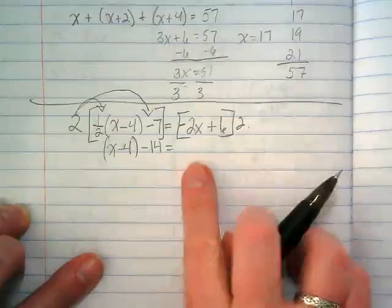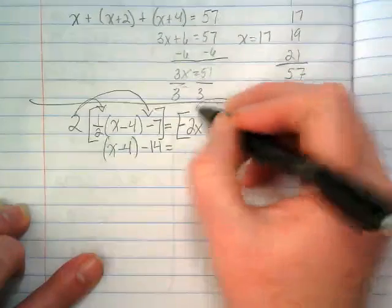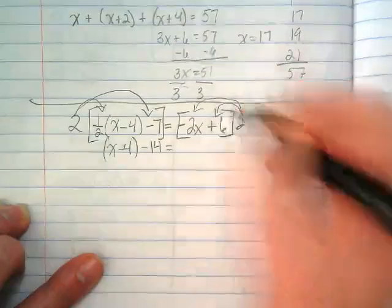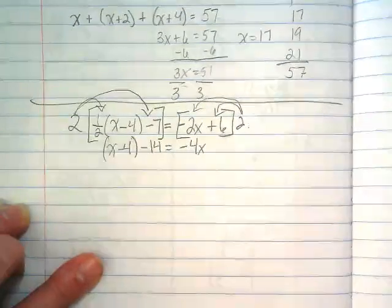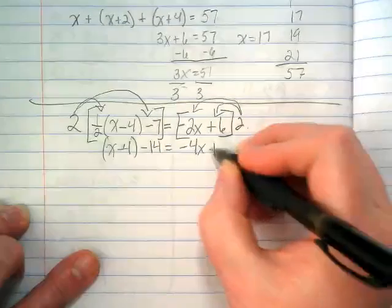On the right side of the equation, this has to be distributed to both terms. So negative 2x is going to become negative 4x, and positive 6 times 2 is going to become positive 12.